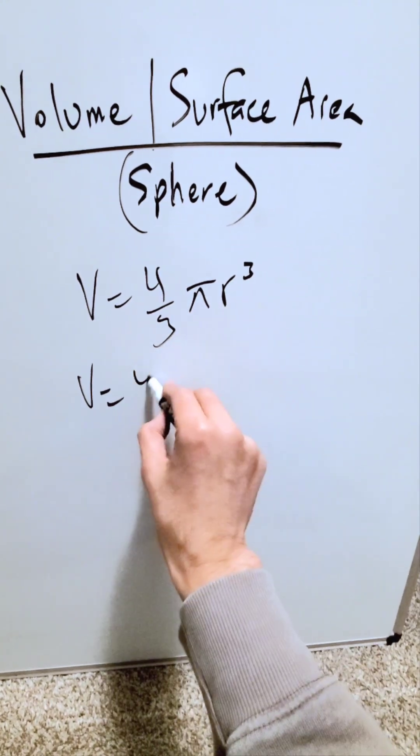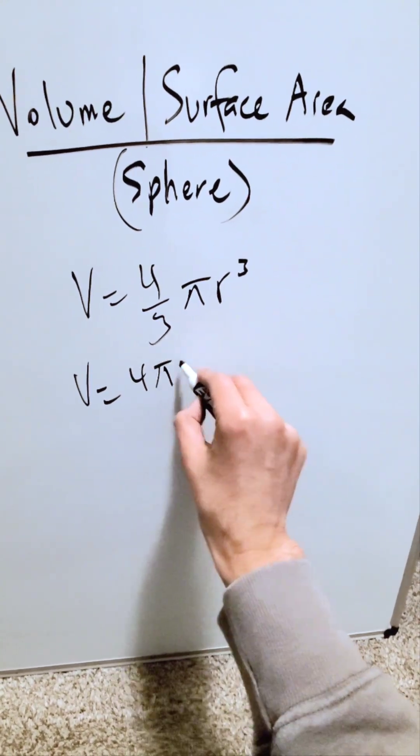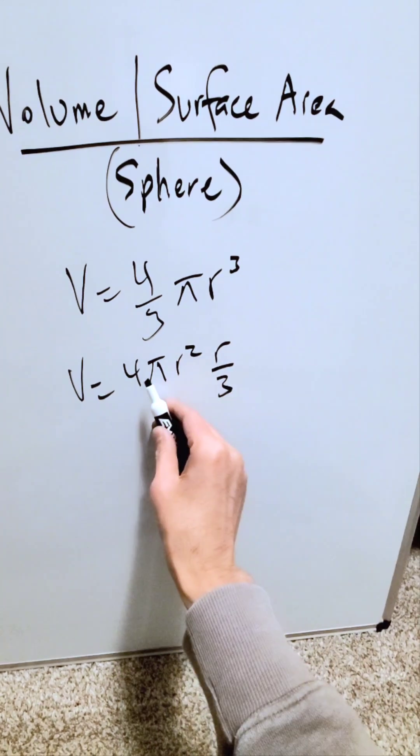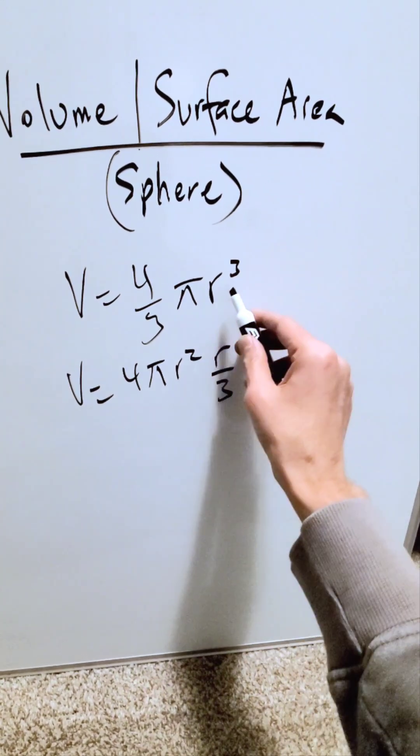Volume is equal to, I'll pluck out some items. I'll have a 4 pi r squared and a r over 3. 4 pi r squared times r over 3 will give you 4 over 3 pi r cubed.